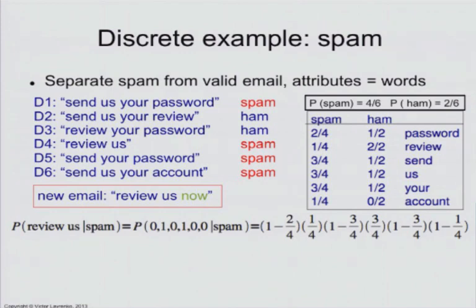Now we want to predict the probability that it's spam versus non-spam. We take this email and convert it into our attribute-value representation. It has only two words: 'review' and 'us.' Zero means the first word in our vocabulary, 'password,' does not occur in that email — and you have to keep around the words that don't occur, otherwise probabilities don't come out right. So: password did not occur, review occurred, send did not occur, us occurred, and 'your' and 'account' did not occur. I have zero values for those attributes and ones for the words that actually occurred.